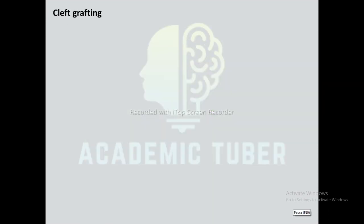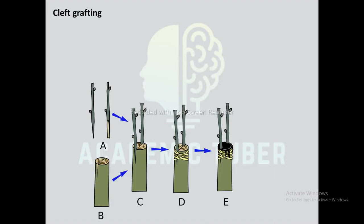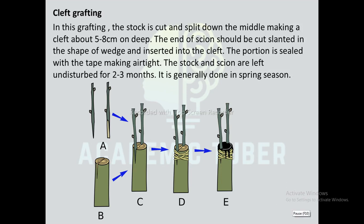Next is cleft grafting. In this grafting, the stock is cut and split down the middle, making a cleft about 5 to 8 cm deep. The end of the scion should be cut slanted in the shape of a wedge and inserted into the cleft. The portion is sealed with tape making it airtight. The stock and scion are left undisturbed for 2 to 3 months. It is generally done in spring season.